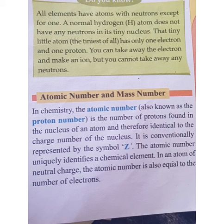Atomic number is also called the proton number, because we count the number of protons. That's why it is also called the proton number. Now let's move towards the mass number.